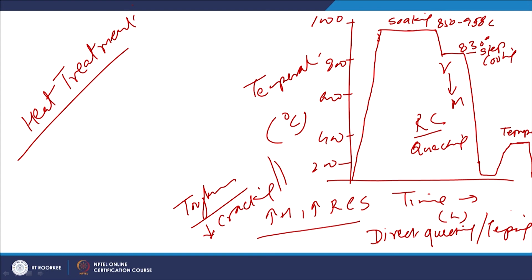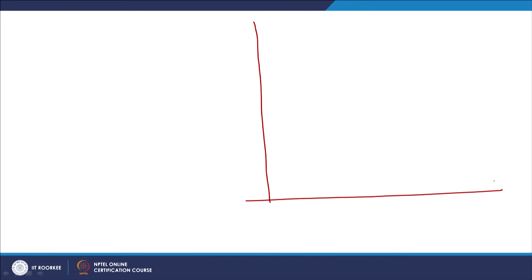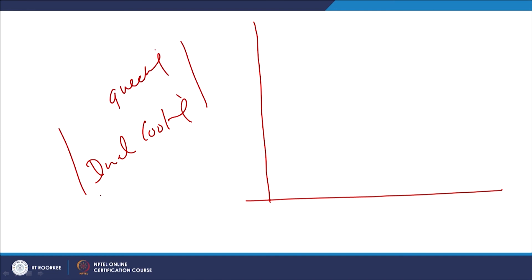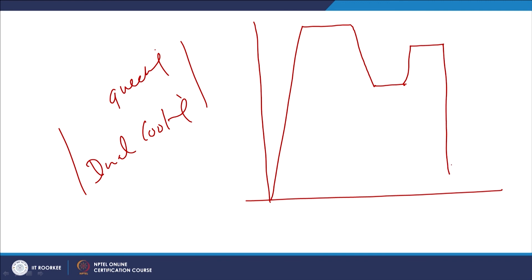If the geometry of the component is complex or the size is large, we need to follow two-stage or three-stage quenching. For dual quenching: first heating, then one stage quenching, then reheating to the AC3 temperature followed by quenching to room temperature, and then tempering.